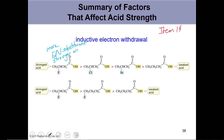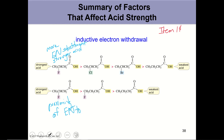You can also compare proximity: if one electronegative atom is bonded at different positions on an acid, the closer the electronegative atom is to the proton, the stronger the acid. We're comparing proximity of the electronegative atom to the acid proton — and the closer it is, the more acidic.